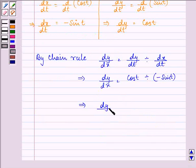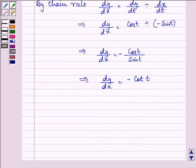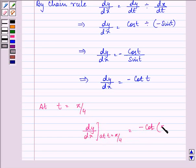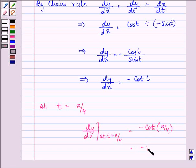Which implies dy by dt is cos t divided by minus sin t, which further implies dy by dx equal to minus cot t. Now, at t is equal to pi by 4 we have the value of dy by dx at t is equal to pi by 4 minus cot pi by 4 whose value is minus 1.